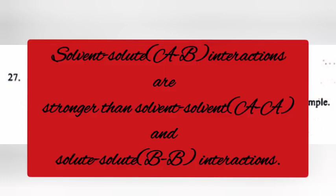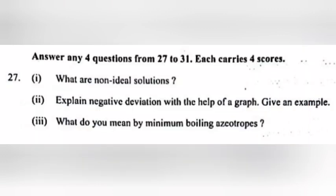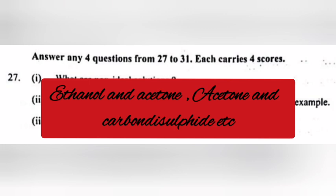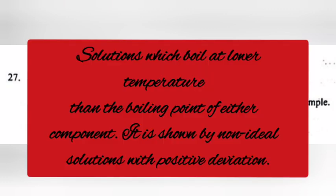Answer: Solvent-solute AB interactions are stronger than solvent-solvent AA and solute-solute BB interactions. Graph. Example: Ethanol and acetone, acetone and carbon disulfide. Part 3: What do you mean by minimum boiling azeotrope? Answer: Solutions which boil at lower temperature than the boiling point of either component. It is shown by non-ideal solution with positive deviation.